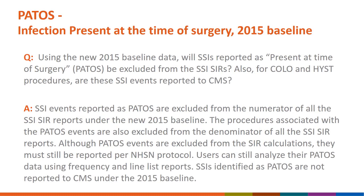Another question is: using the new 2015 baseline data, will SSIs reported as PATOS be excluded from the SSI SIRs? Also, for COLO and HIST procedures, are these SSI events reported to CMS? SSI events reported as PATOS are excluded from the numerator of all the SSI SIR reports under the new 2015 baseline. The procedures associated with the PATOS events are also excluded from the denominator of all the SSI SIR reports. Although PATOS events are excluded from the SIR calculations, they must still be reported per NHSN protocol. Users can still analyze their PATOS data using frequency and line list reports. SSIs identified as PATOS are not reported to CMS under the new 2015 baseline.